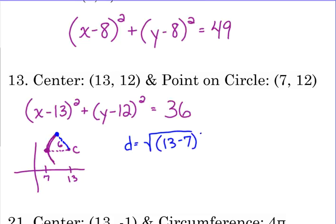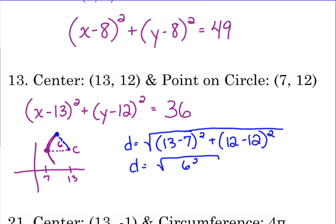The same way, 13 minus 7 squared plus 12 minus 12 squared, it would have given us the same information as what we figured out when we drew the picture. 13 minus 7 is 6, 6 squared is 36, 12 minus 12 is 0.